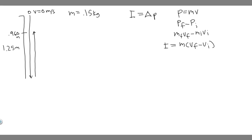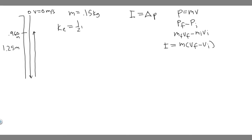So what is the final and initial velocity? The final velocity is after the bounce going back up, and the initial velocity is the velocity right before it hits the ground. We'll find those velocities using energy formulas. You need to know kinetic energy, which is one-half mv squared, and potential energy, which is mgh.